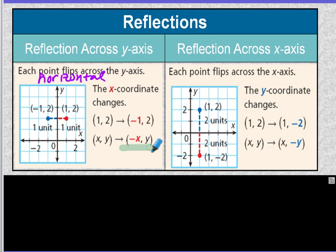Reflection across the x-axis is actually a vertical reflection. So it's kind of counterintuitive, but this is actually a vertical reflection because your y-coordinates are changing. And what happens, your y-coordinates just become negative. So if they were negative, they're now positive. If they were positive, they're now negative.